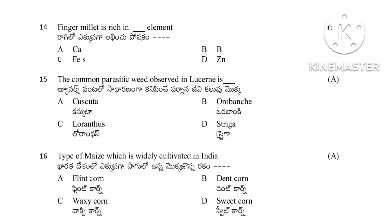Question 14: Finger millet is rich in which element — calcium, boron, iron, sulfur, or zinc. The answer is calcium. Question 15: Most common parasitic weed in lucerne — Cuscuta, Orabanche, Loranthus, or Striga. The answer is Cuscuta. Question 16: Type of maize widely cultivated in India — flint corn, dent corn, waxy corn, or sweet corn. The answer is flint corn.